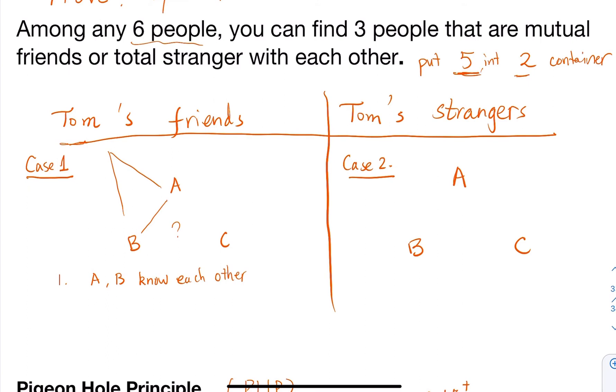Because everybody here knows Tom. You may ask, what if nobody knows each other? What if A, B, C are total strangers? If A, B, C are total strangers and don't know each other, then either way we're done.